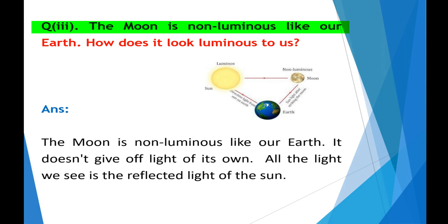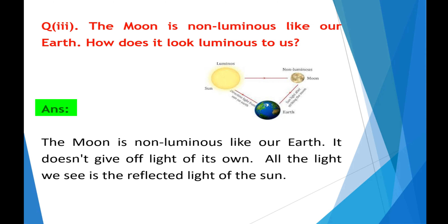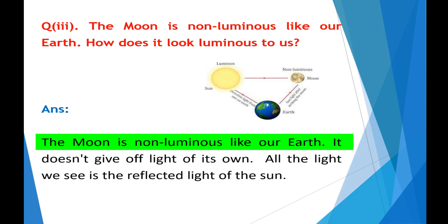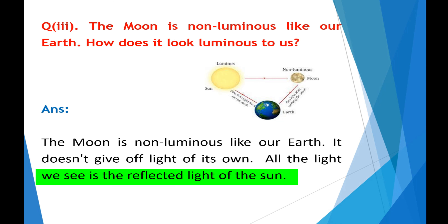Question No. 3: The moon is non-luminous like our earth. How does it look luminous to us? Answer: The moon is non-luminous like our earth — it doesn't give off light of its own. All the light we see is the reflected light of the sun.